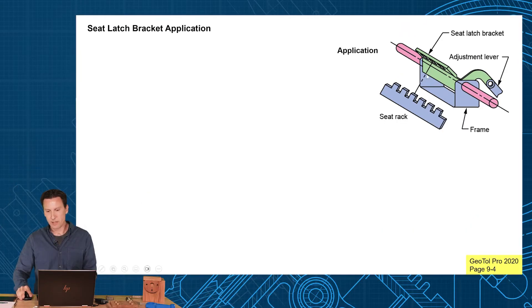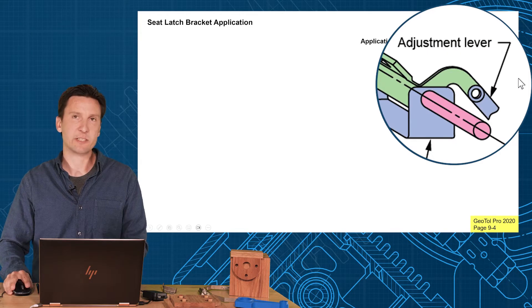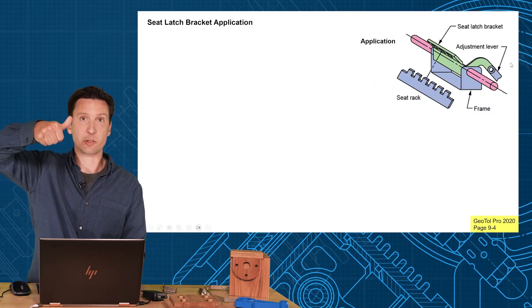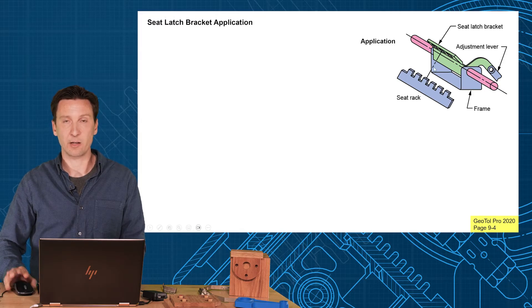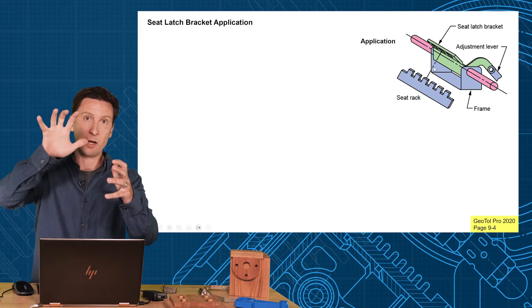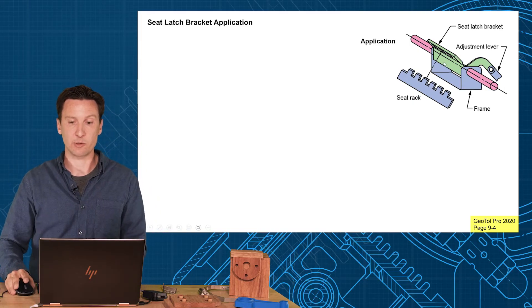There's a main pivot pin in pink that goes through these two coaxial holes. This adjustment lever right here will attach to a handle that the user can pull up. Then it'll pivot on this alignment pin right here, unrack itself from the seat rack. You can adjust the whole thing forward, let go of the handle, and it should re-rack itself in a new location.